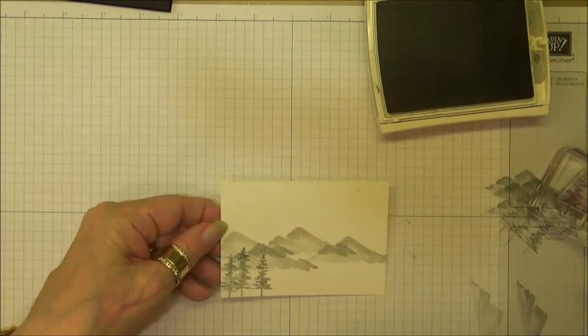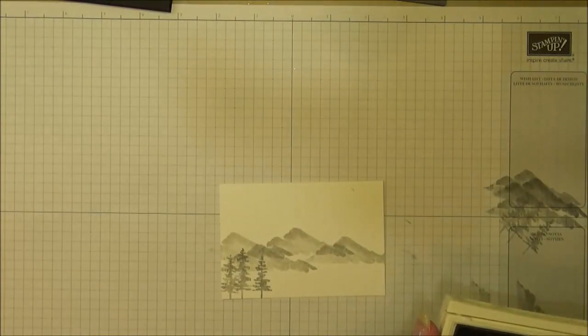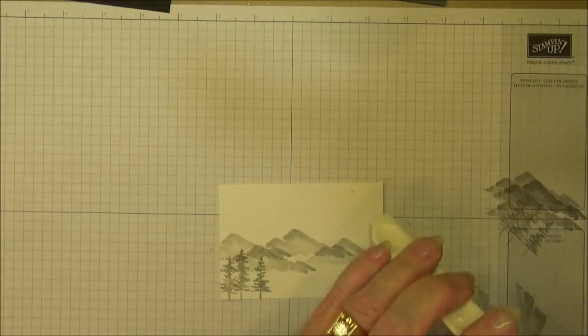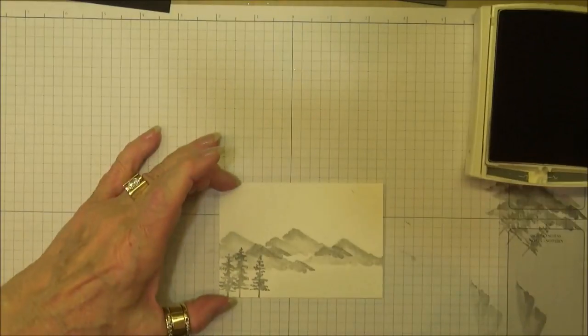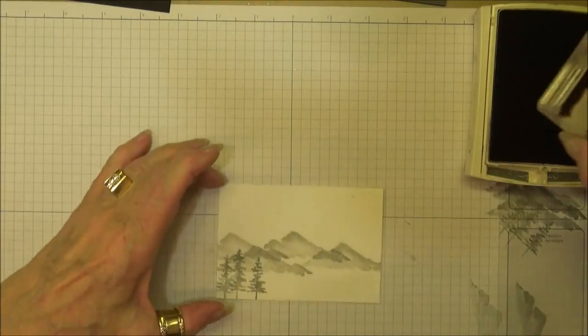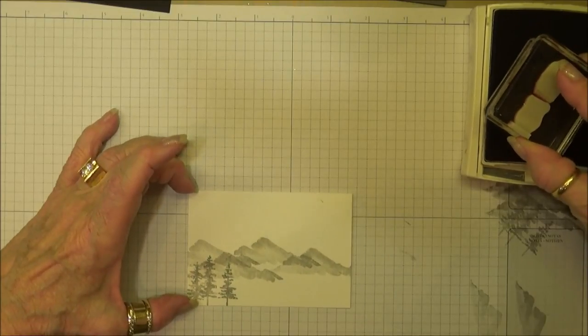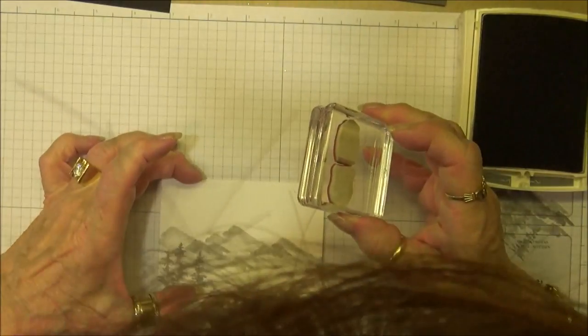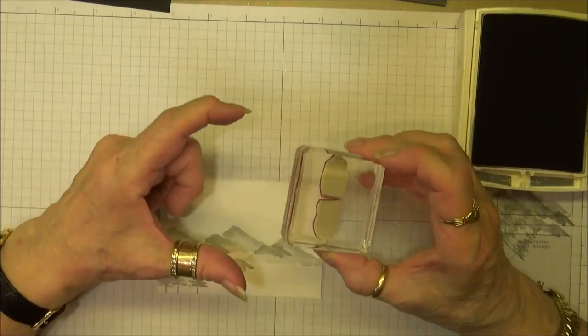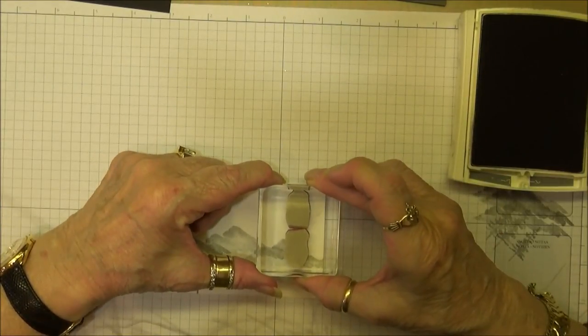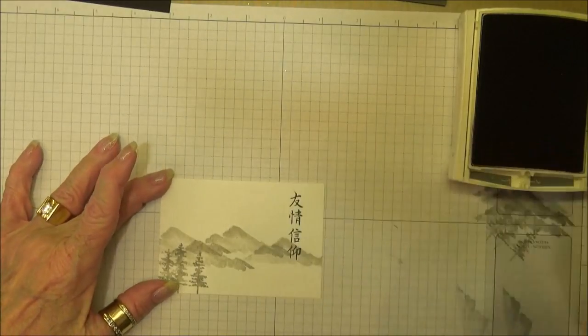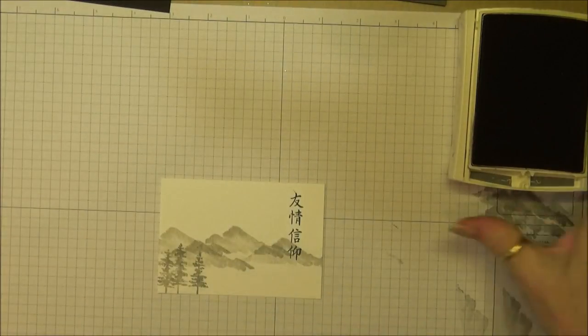Now we're going to go back to our basic gray and stamp our symbols. We just want to make sure that cardstock is straight. There we go. All right, so we're all done.